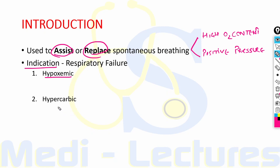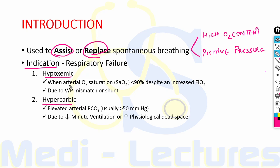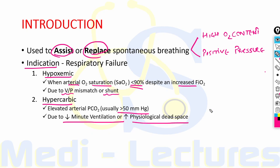The first type is hypoxemic respiratory failure, which occurs when arterial oxygen saturation (SaO2) is less than 90% despite an increase in FiO2 (fraction of oxygen in inspired air). It occurs mainly due to ventilation-perfusion mismatch or shunting. Hypercarbic respiratory failure is due to elevated arterial partial pressure of CO2, usually more than 50 mmHg, caused by decreased minute ventilation or increased physiological dead space, leading to inadequate alveolar ventilation.